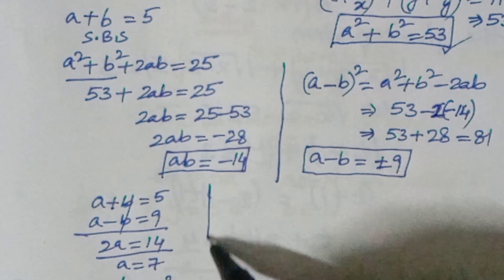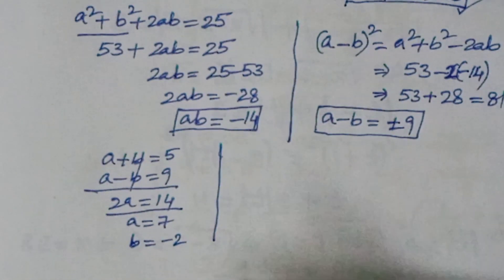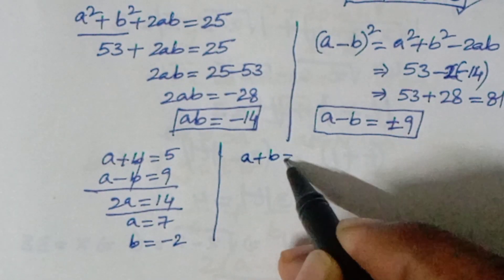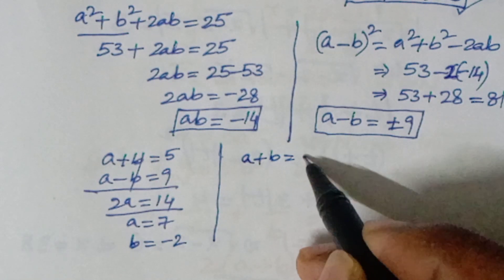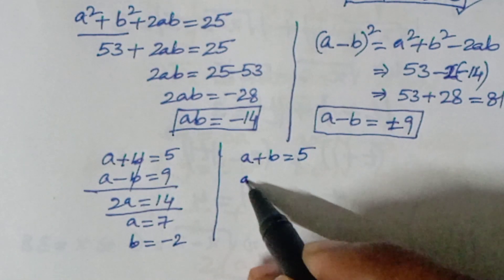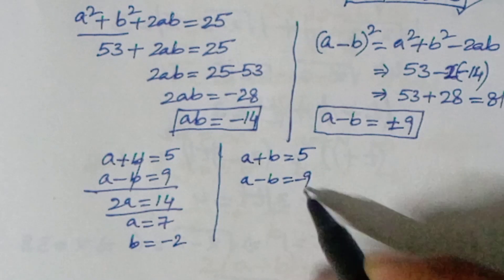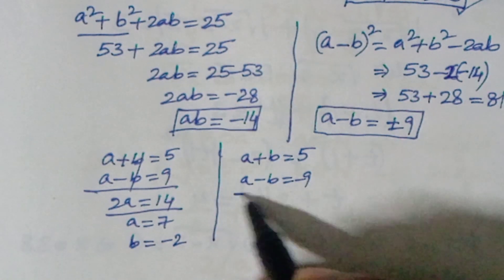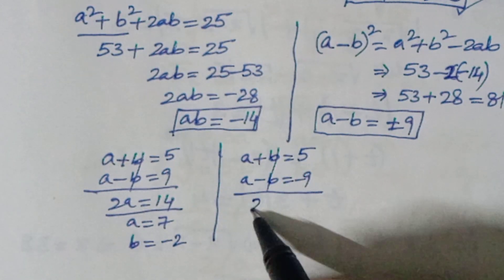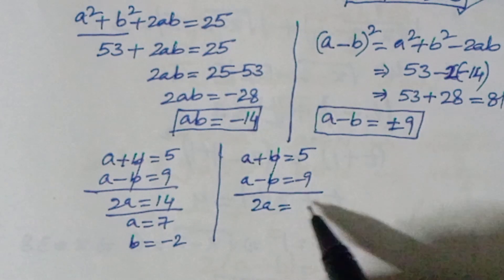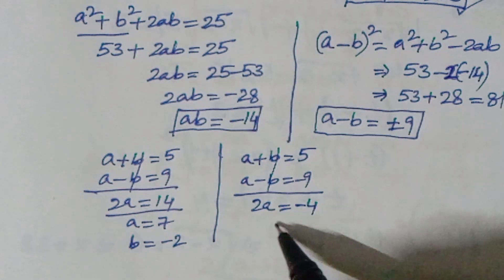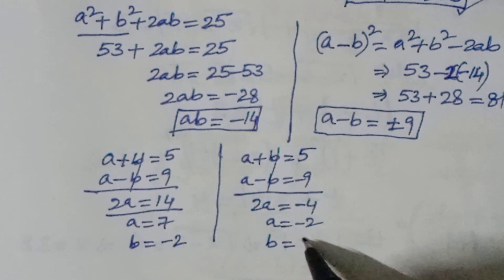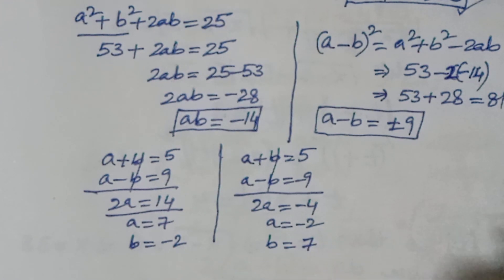For the second case: a + b = 5 and a - b = -9, giving 2a = -4, so a = -2 and b = 7. These are the vice versa solutions.